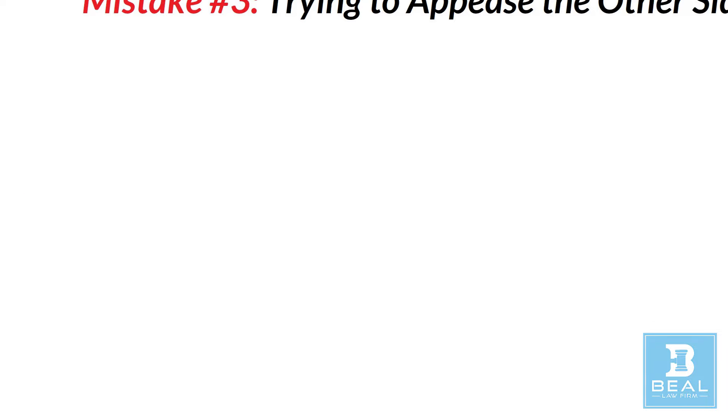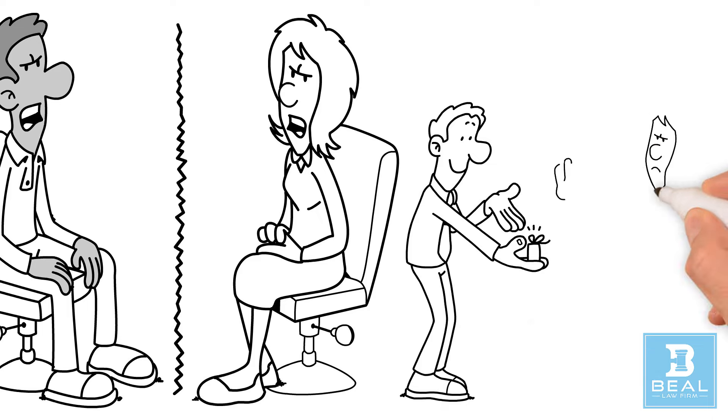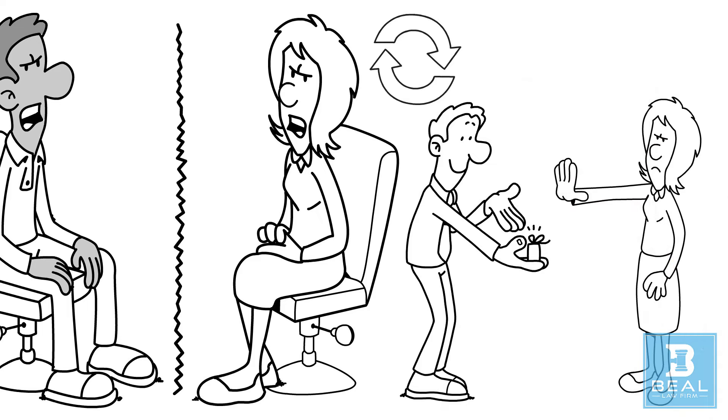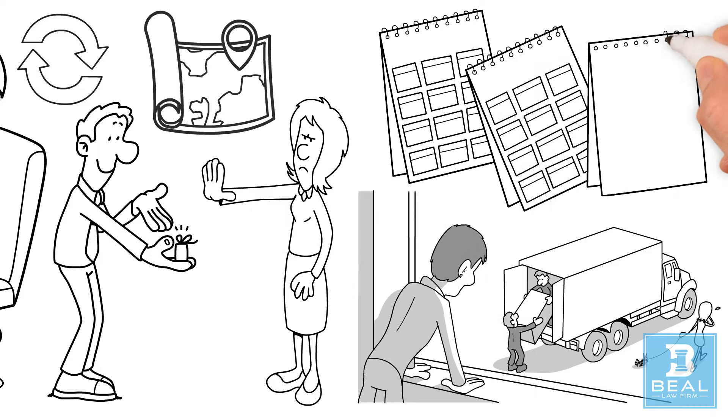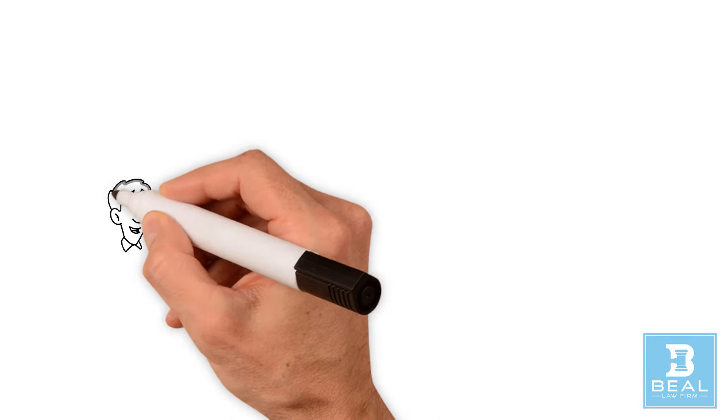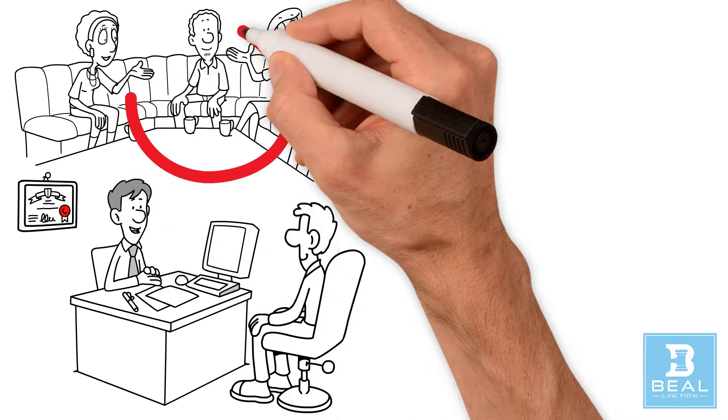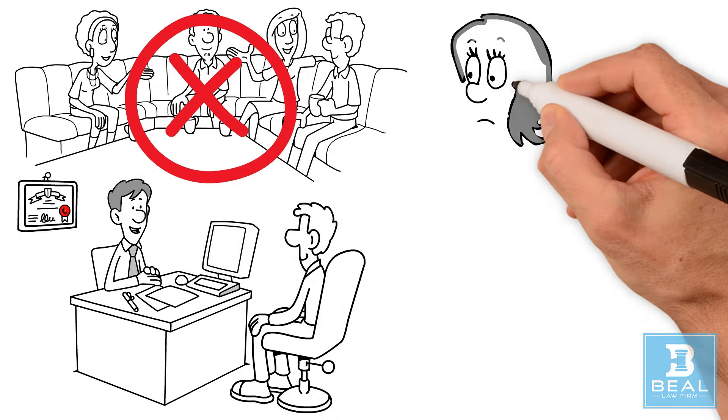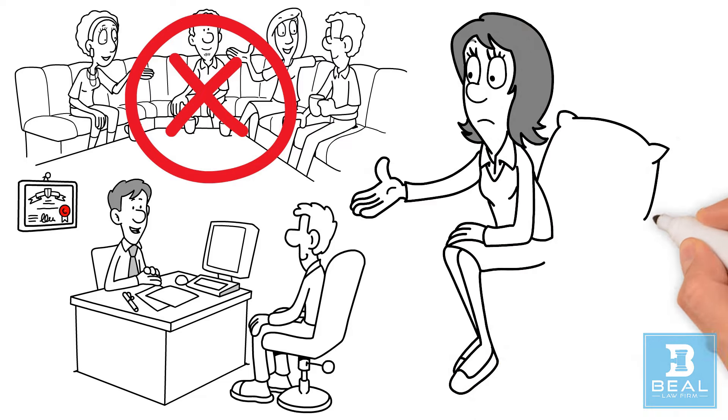Mistake number three – Trying To Appease The Other Side. If your spouse is determined to divorce, giving in to their demands rarely helps. Drastic changes like moving out or agreeing to relocations can have long-term consequences. Always seek advice from a qualified expert instead of friends or family. Family and friends mean well, but they usually lack the amount of experience needed to give you solid advice.